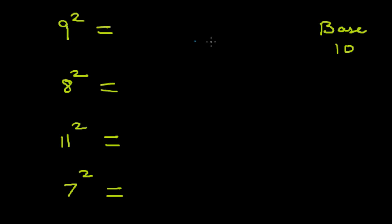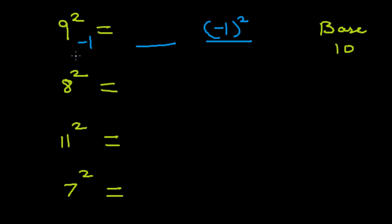Now we need to subtract the number from the base. So 9 minus 10 is minus 1. Remember, it's the number minus the base, so it's minus 1. The next step, we need to find the digits at the units place and the tens place. For the digits at the units place, we find the square of minus 1. To find the digits at the tens place, we add 9 and minus 1. So 9 minus 1 is 8, and 1 squared is 1. The answer is 81.